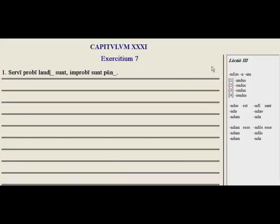Here we have practice with the gerundive — the adjectival verbs that decline like an adjective, but have a verbal sense: a passive verbal sense of needing to be done to the subject.